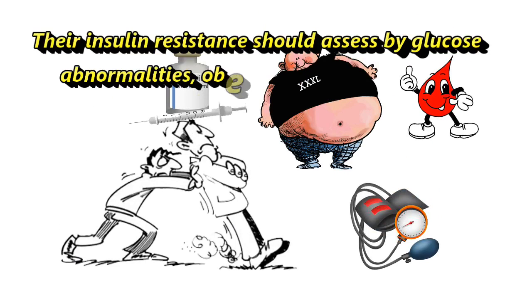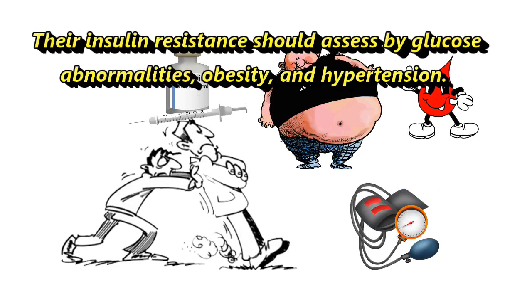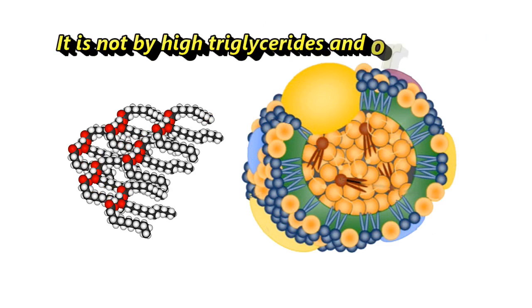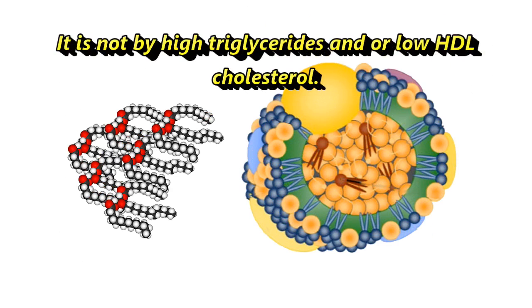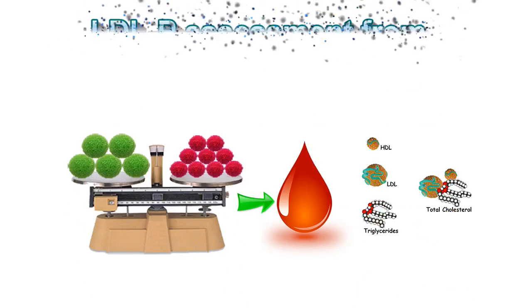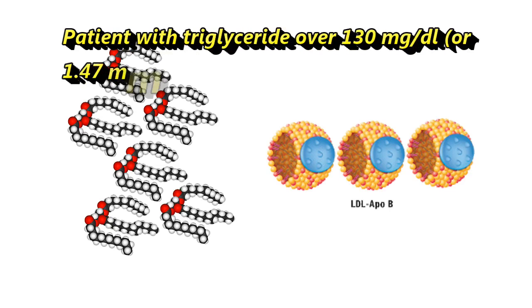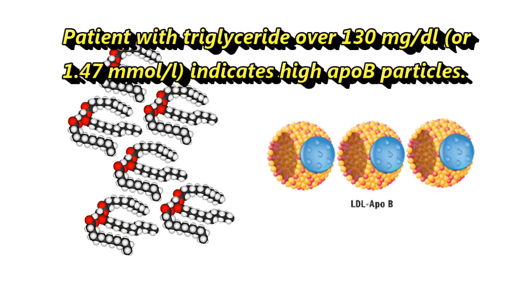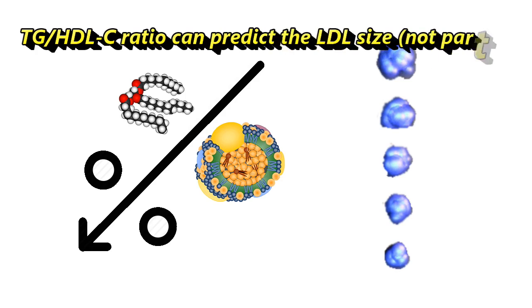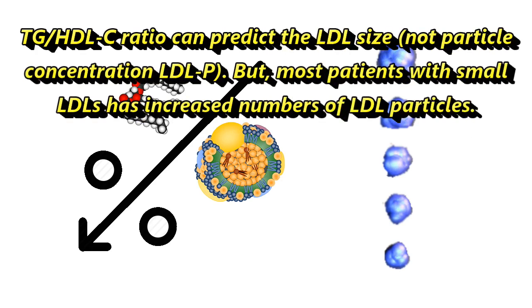For African Americans, insulin resistance should be assessed by glucose abnormalities, obesity, and hypertension — not by high triglycerides or low HDL cholesterol. Regarding LDL particle assessment: patients with triglycerides over 130 mg/dL (1.47 mmol/L) indicate high ApoB particle levels. The TG-to-HDL-C ratio can predict LDL size but not LDL particle concentration (LDL-P). However, most patients with small LDLs have an increased number of LDL particles.